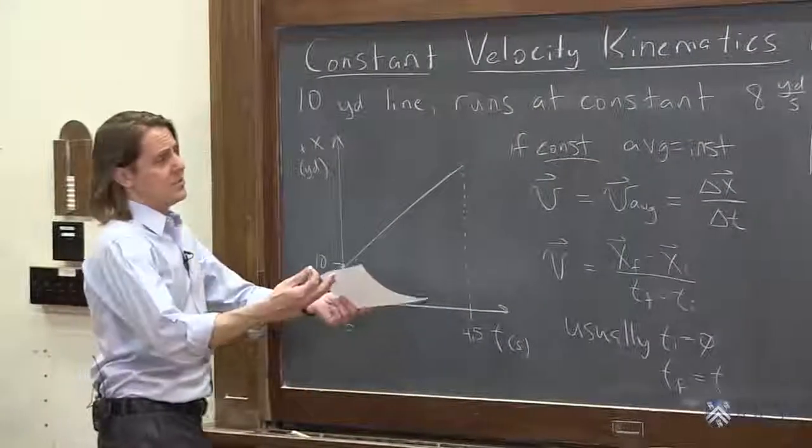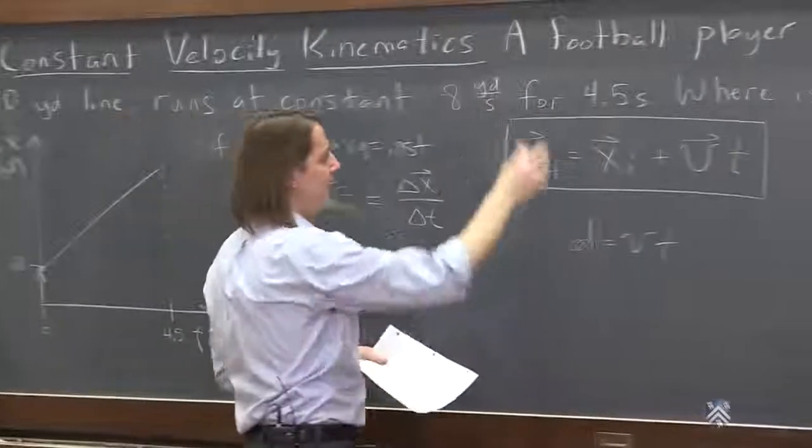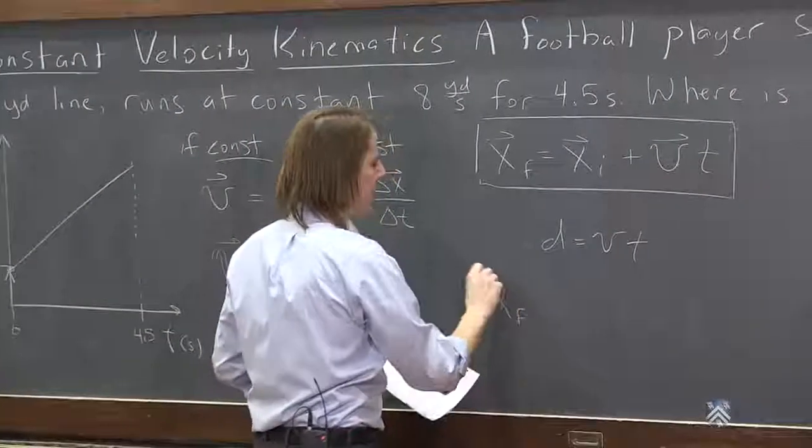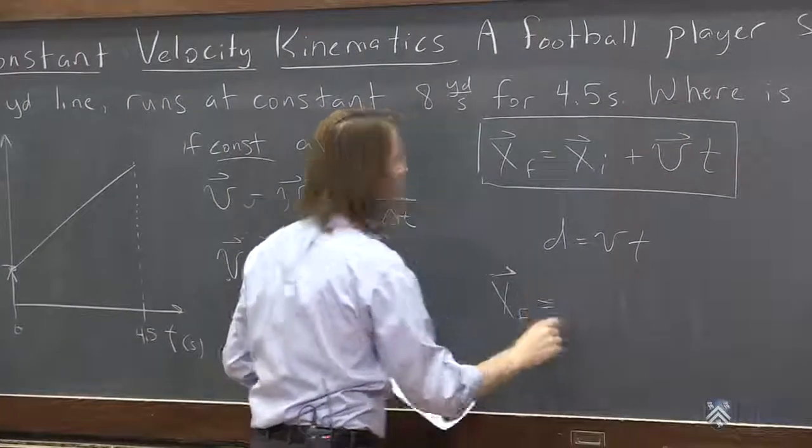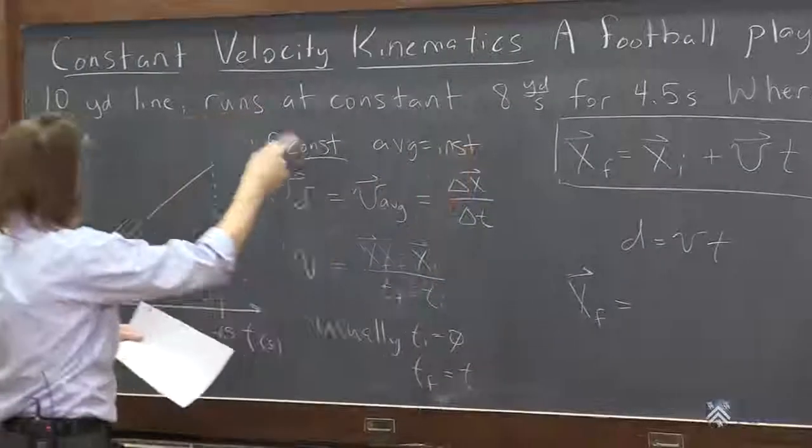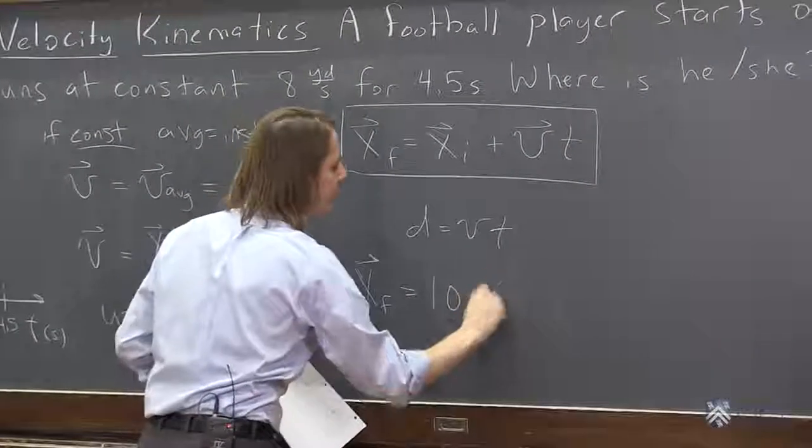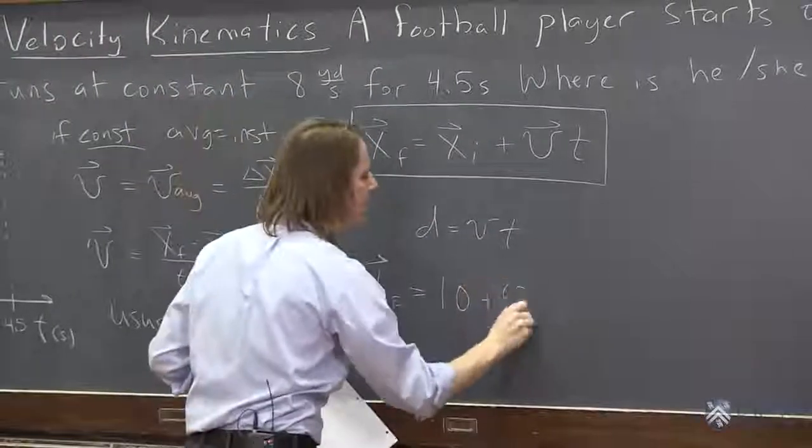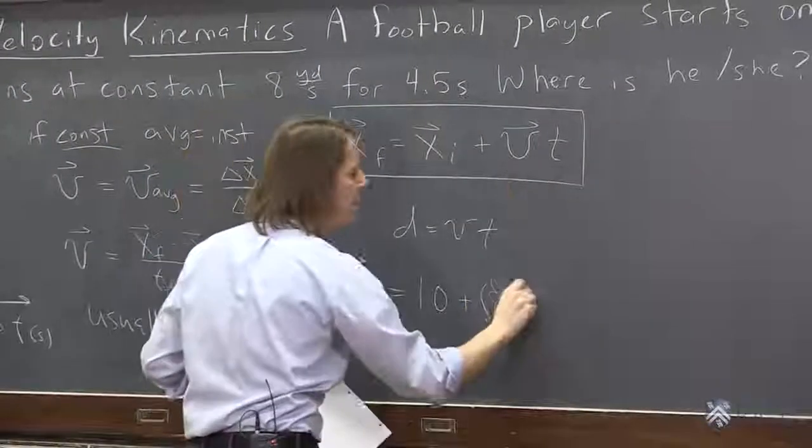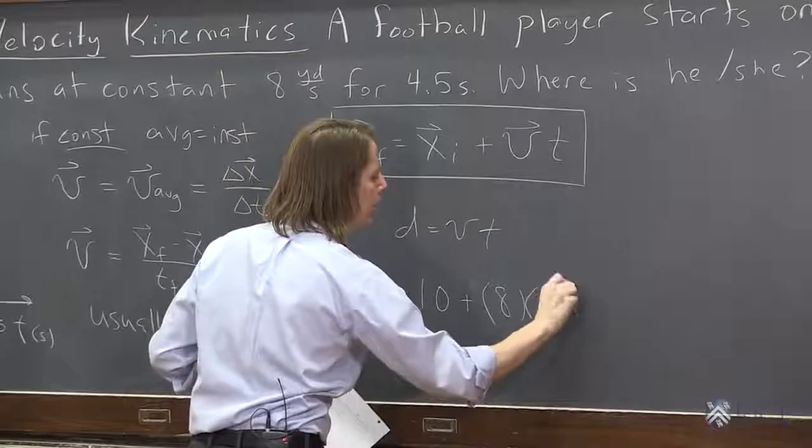And to use it, it's just a straightforward plug it in. Again, the final position is the initial position, which was 10, the 10-yard line, plus the speed, or the velocity in this case, 8 yards per second, t, 4.5.